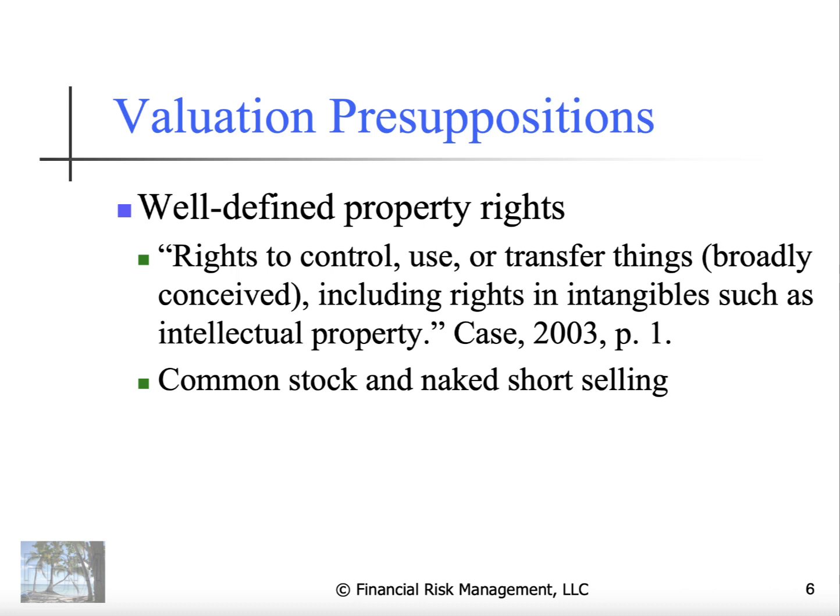There are basically four presuppositions. The rational intelligibility of the universe is one. Beyond that, the idea that we have well-defined property rights. I find it difficult to conceive of valuing an instrument in a culture that denies property rights. Property rights include rights to control use and transfer things broadly conceived, including rights in intangibles such as intellectual property.